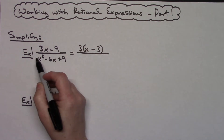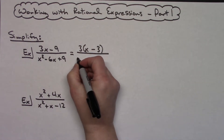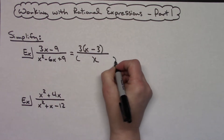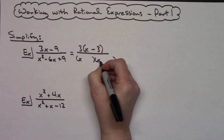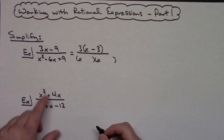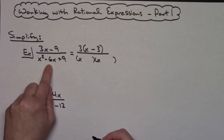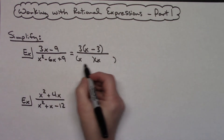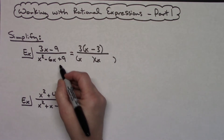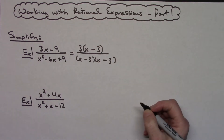Looking at this denominator, I have a trinomial. It's going to be an easier trinomial because the leading coefficient is 1. Trinomials factor into two binomials, and since there's an x² in front, my first terms will just be x and x. I need two numbers that multiply to positive 9 and add to negative 6. The only way to get a negative 6 is with two negatives, so I can use negative 3 and negative 3.